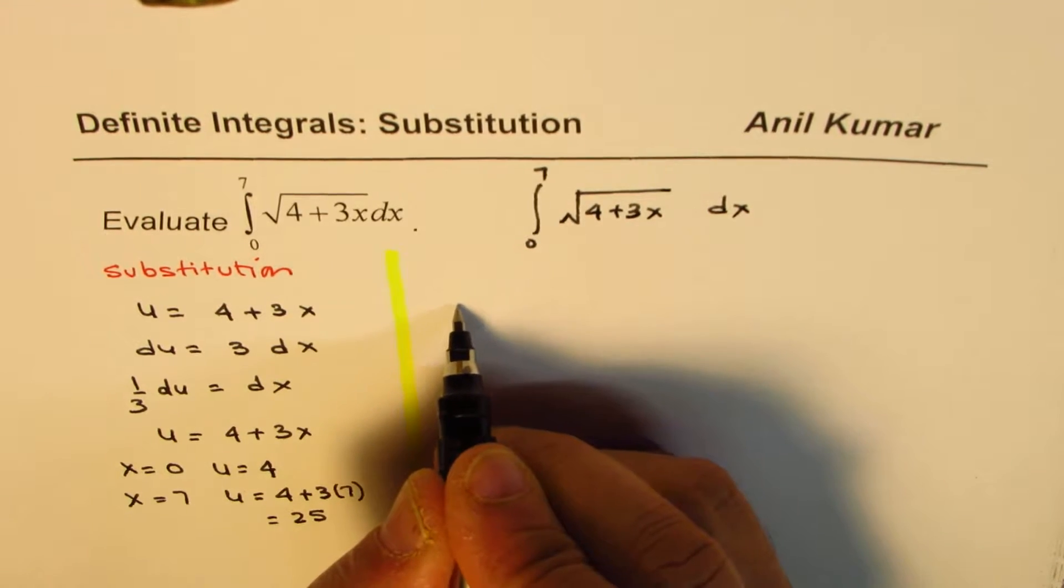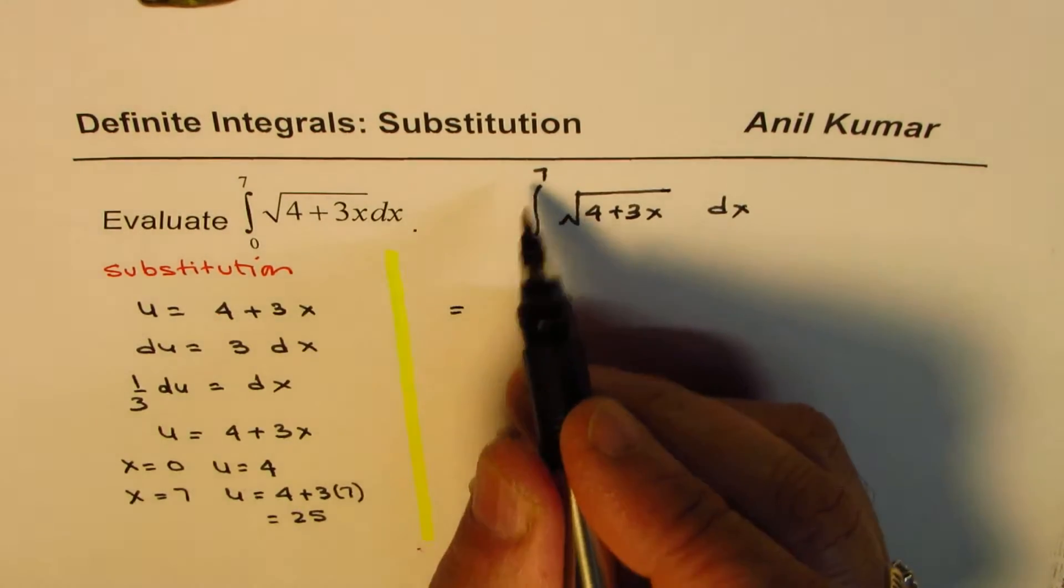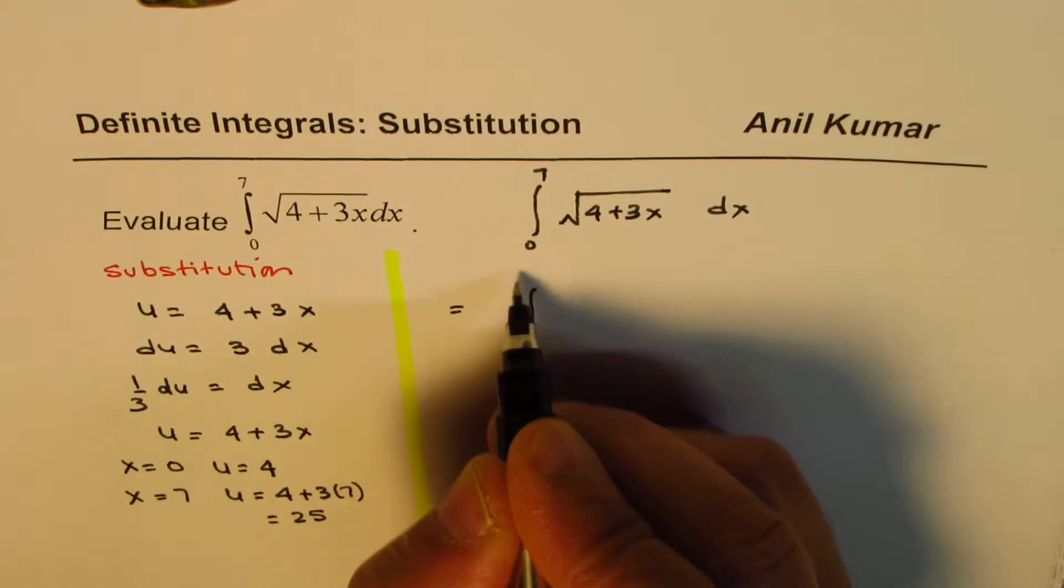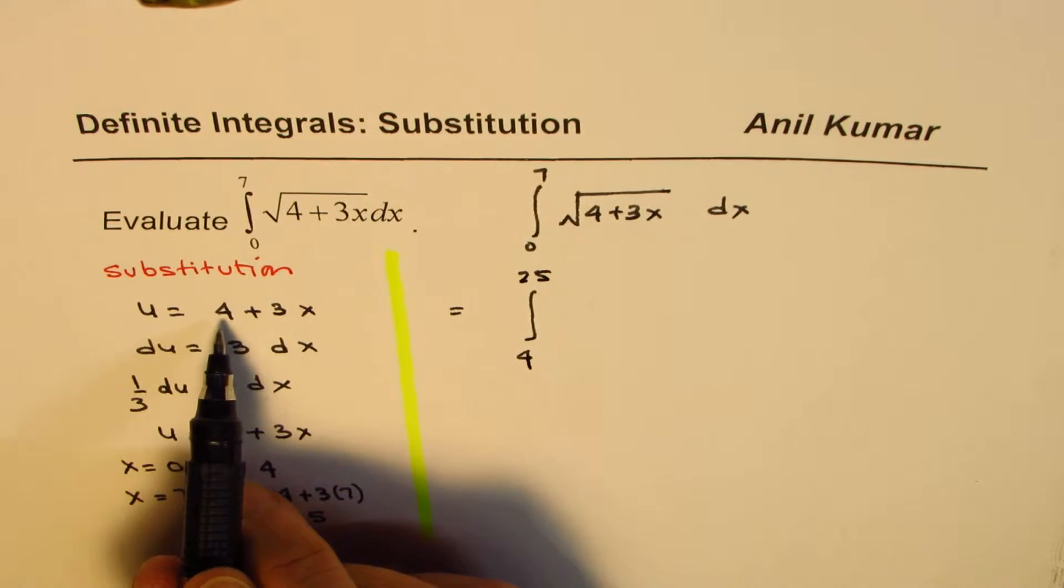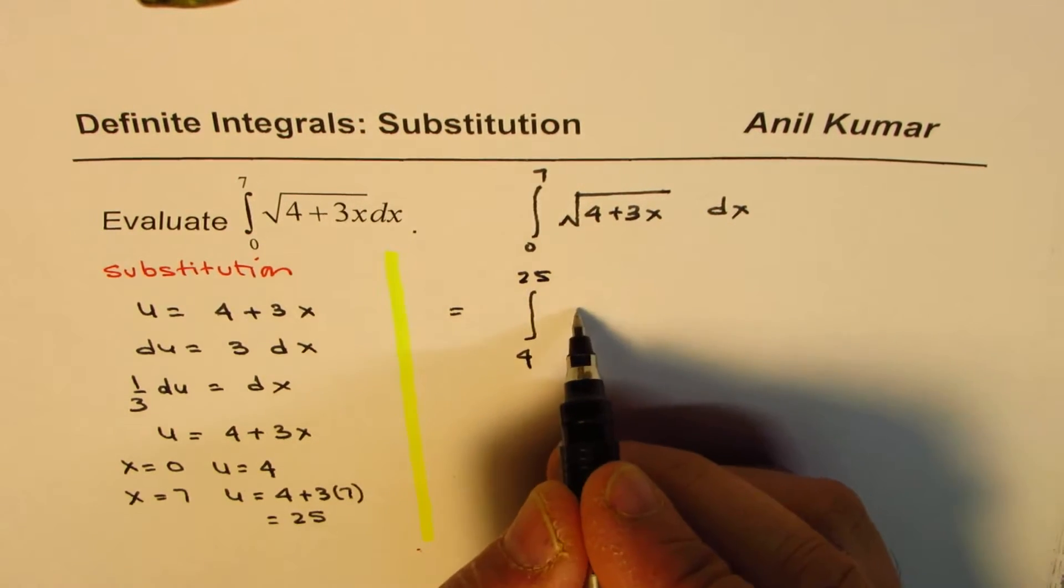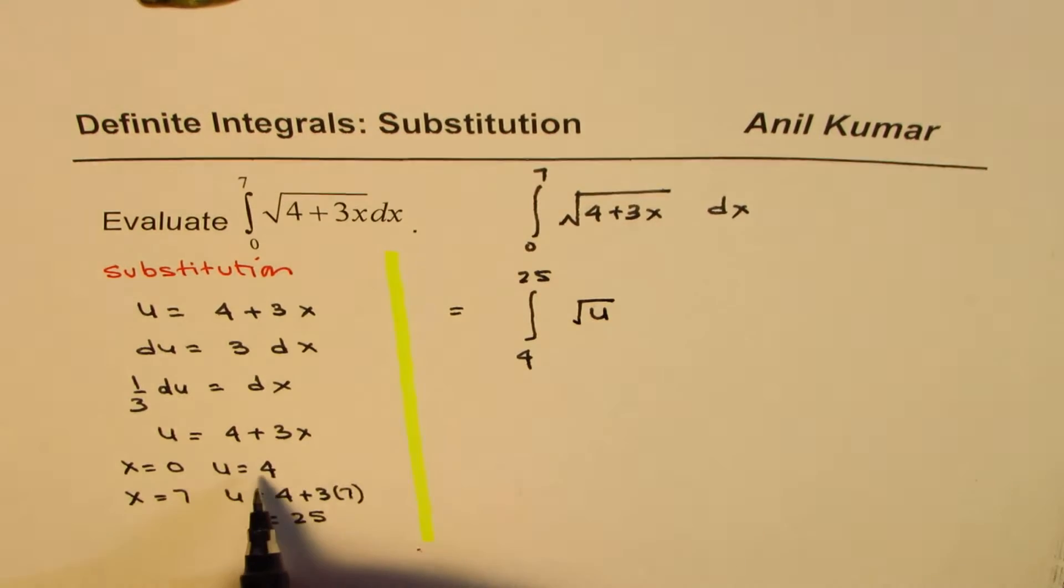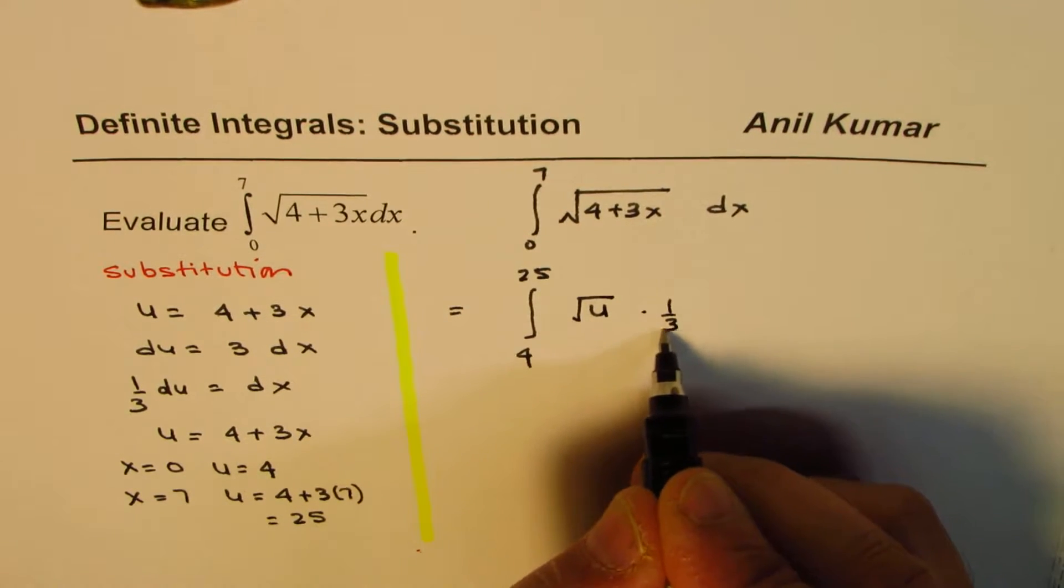So, when we make this substitution, the limits we see, 0 to 7, will be changed to 4 to 25. We made a substitution, u equals to 4 plus 3x. So, we could write this as, square root of u times 1 over 3 du.